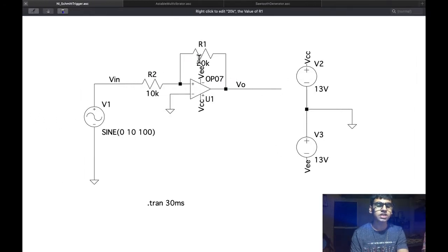Here the VUTP and VLTP is decided by the R1 and R2 resistors. Both the VUTP and VLTP in both these configurations, inverting and non-inverting, have the same magnitude value since these are symmetric configurations.